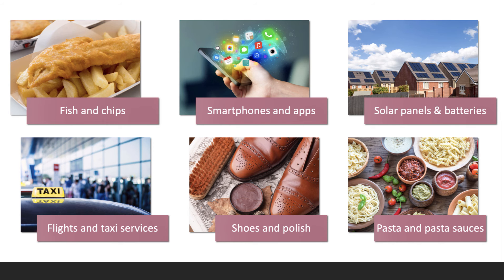Loads of examples: fish and chips; if you buy a smartphone, the apps you download; solar panels and batteries, increasingly common in households generating their own energy; pasta and pasta sauces; shoes and polish; and flights and taxi services — things that you tend to buy and consume jointly at a period in time.